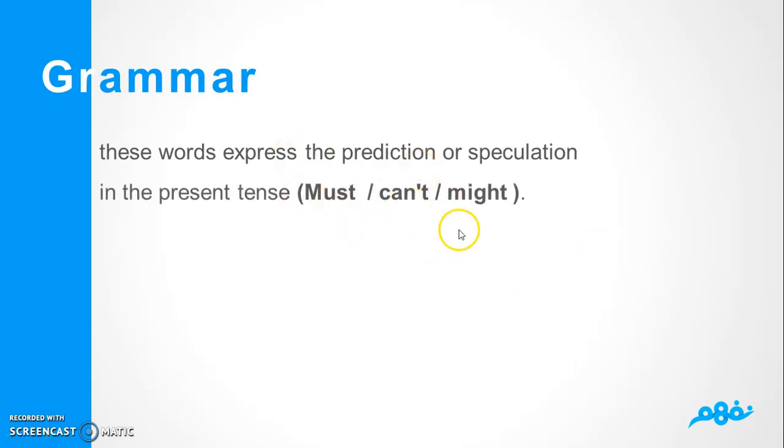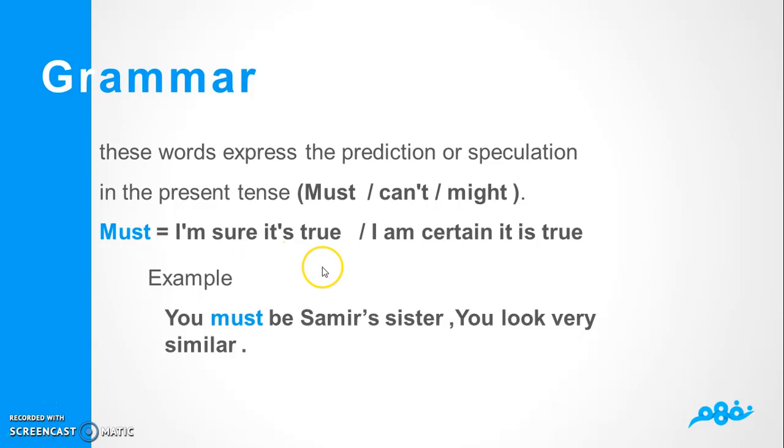Must or can't. Remind that using these in the present tense. Like example: must equals in this meaning I'm sure it's true, I'm certain it's true. You can use it like example, we have: You must be twin sisters, you look very similar.